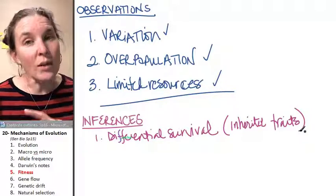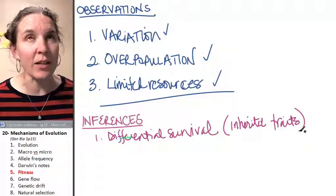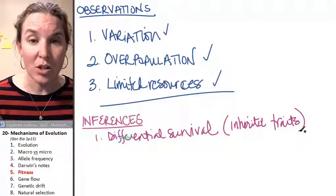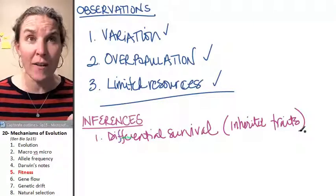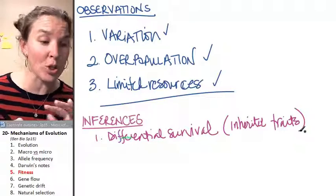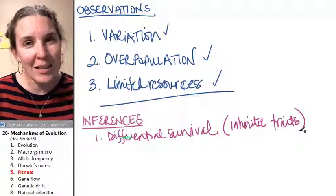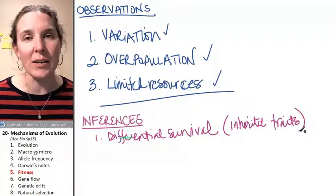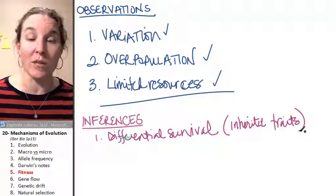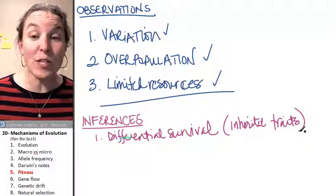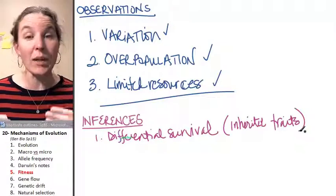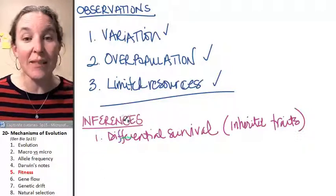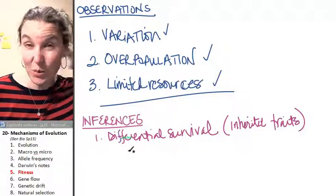This only works, Darwin's little plan here, his little conclusion only works with inherited traits. So it's not an example of differential survival due to his process unless the variety, the variation can be inherited. So if we were to go back and think about our population of ladybugs, if for some reason the polka dotted ladybugs were more likely to survive and the polka dots were an inherited trait, then this is his conclusion that this is what happens.